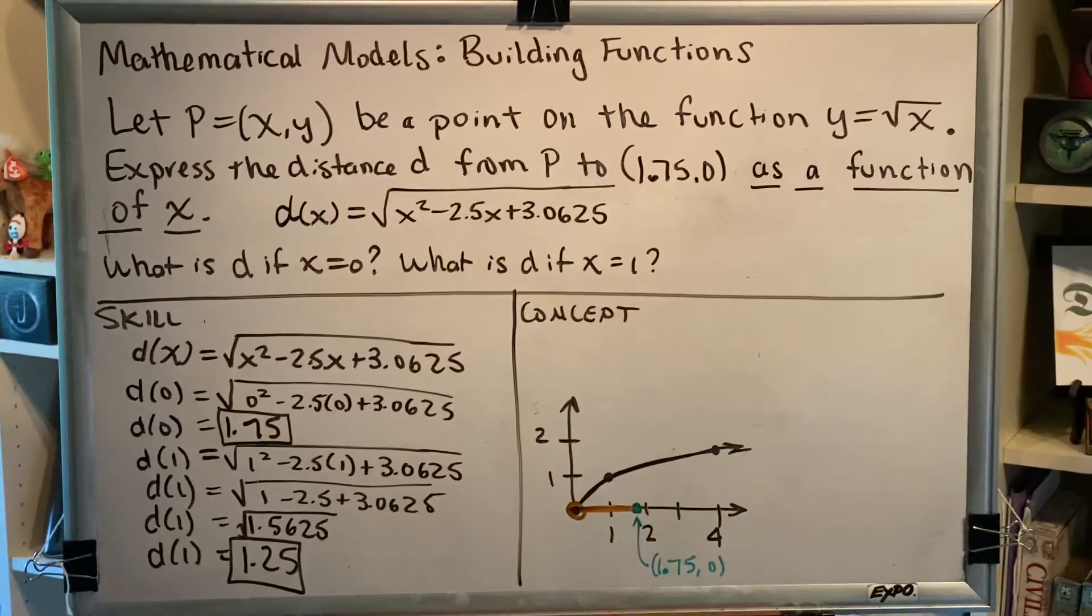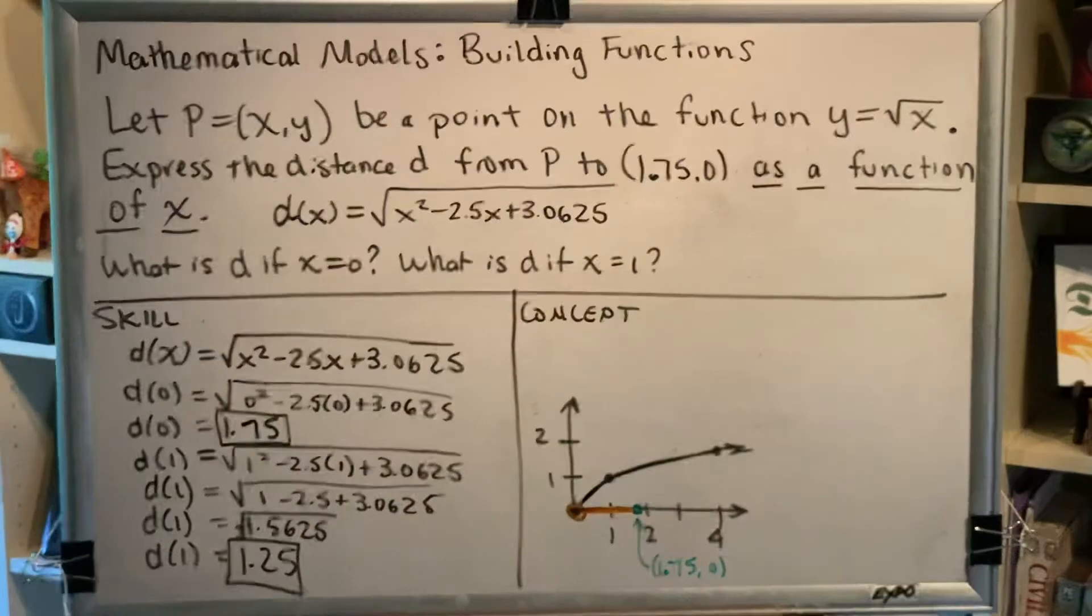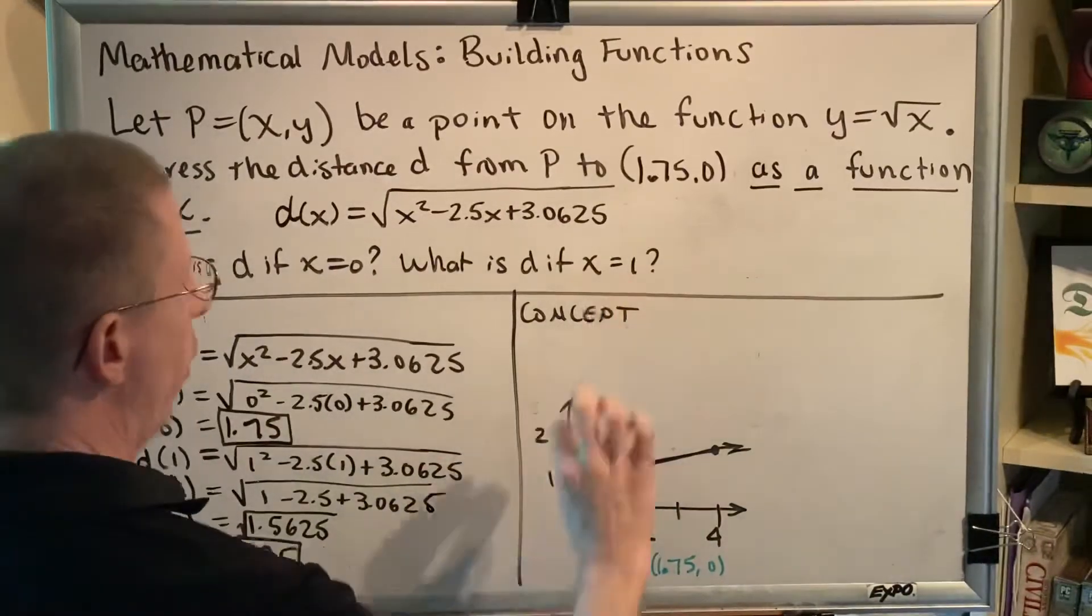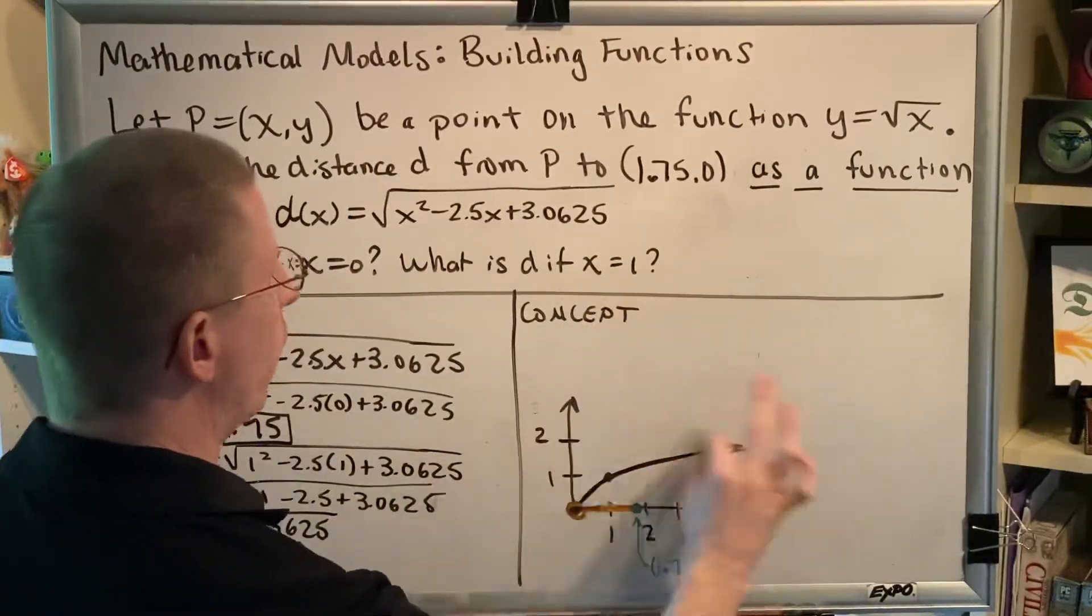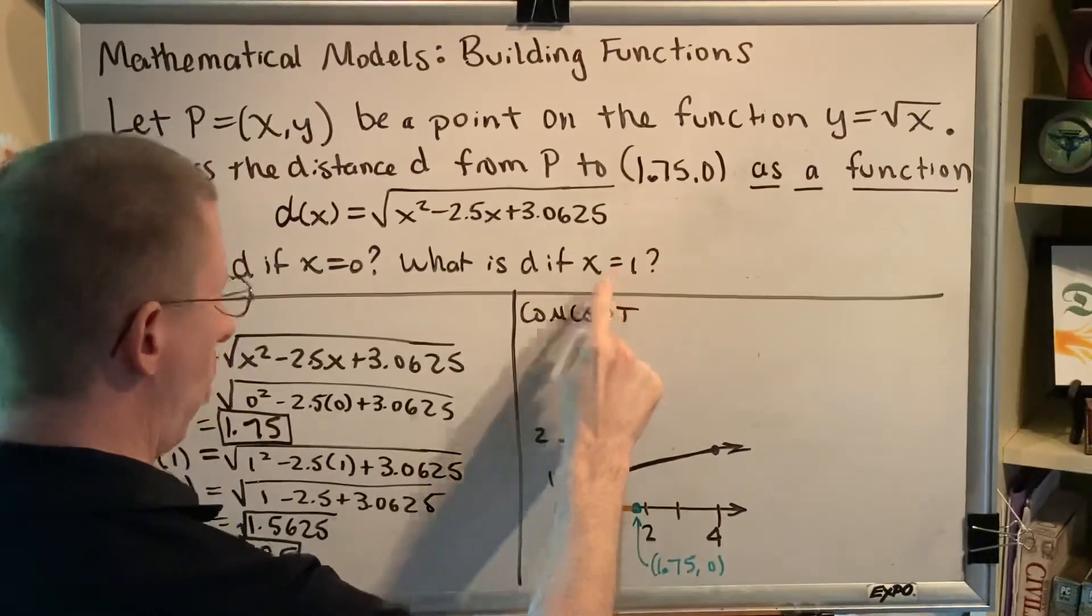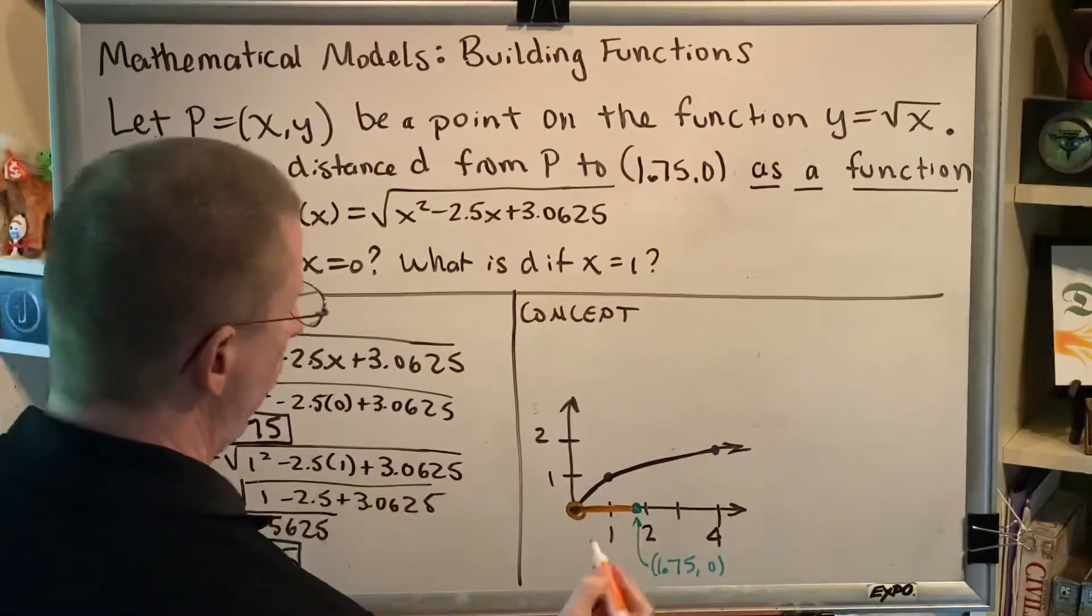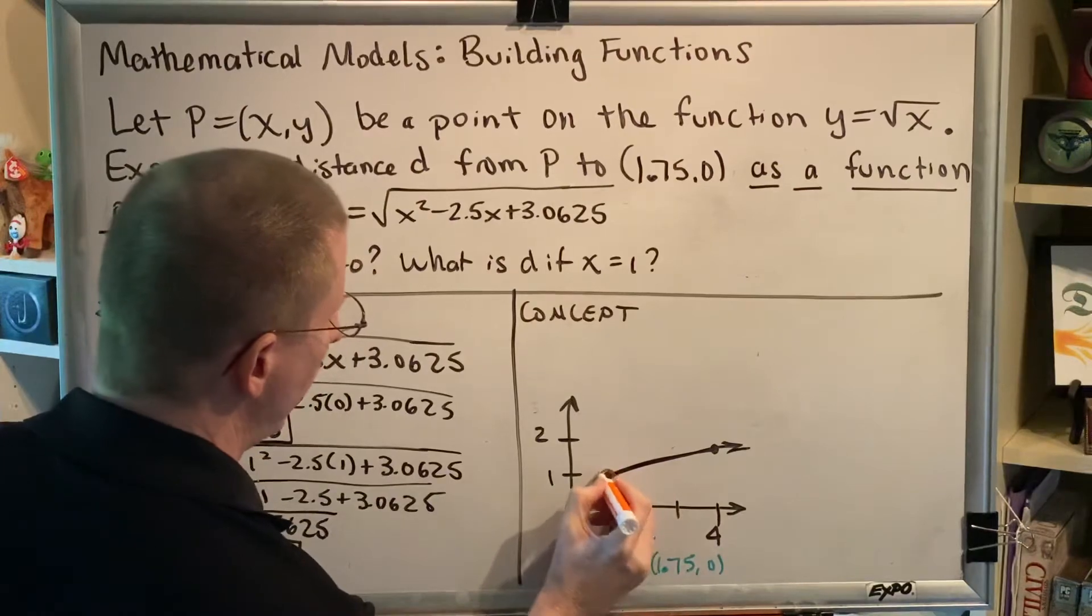Okay, so now let's turn our attention to the concept. So now they're telling us that the point on our square root function is the point where the x-coordinate is 1. So that would be this function point right here. This is the only point on the square root function that has an x-coordinate of 1.